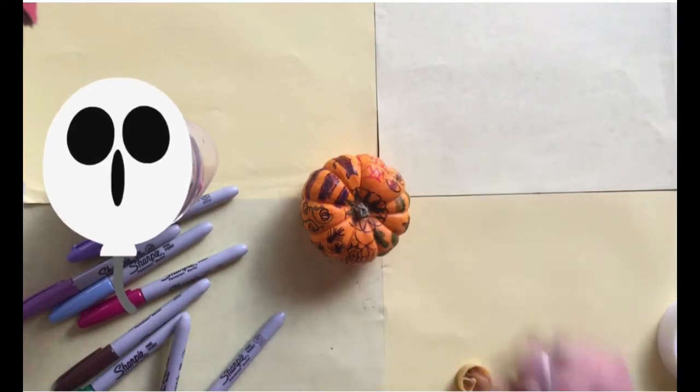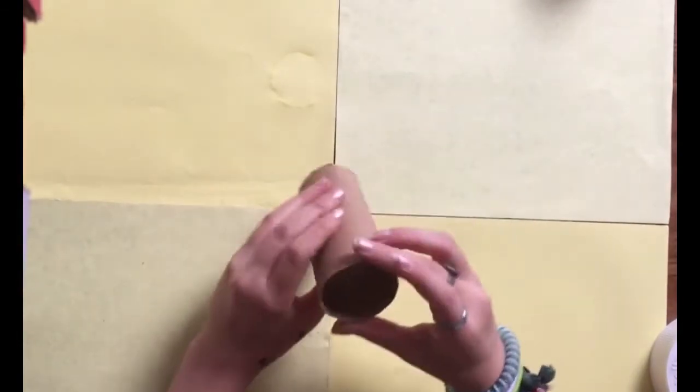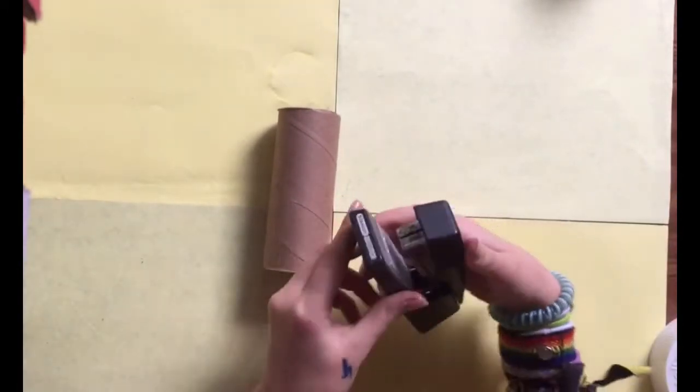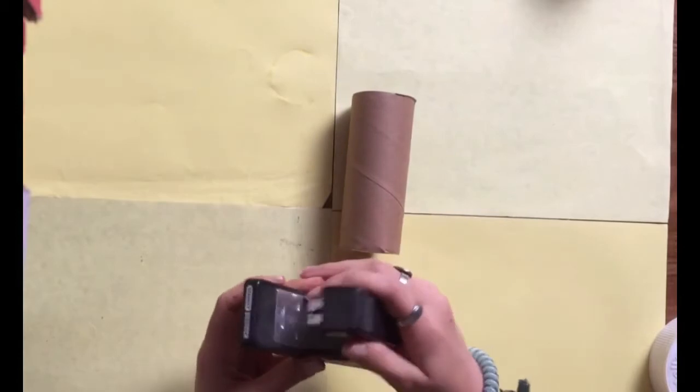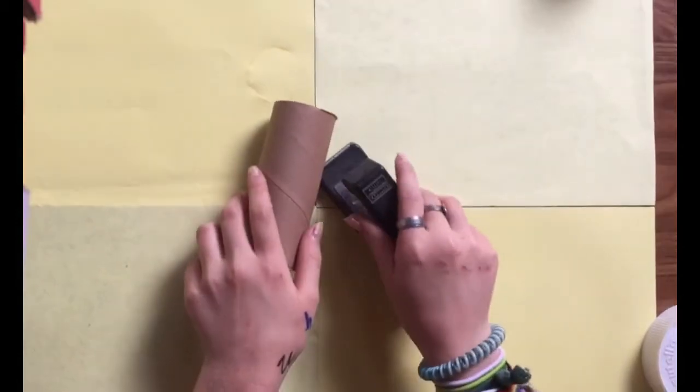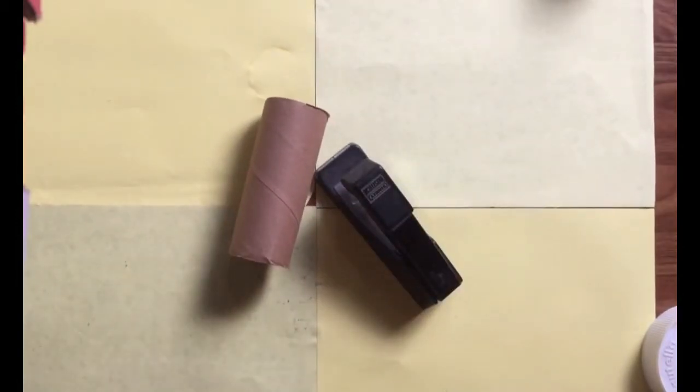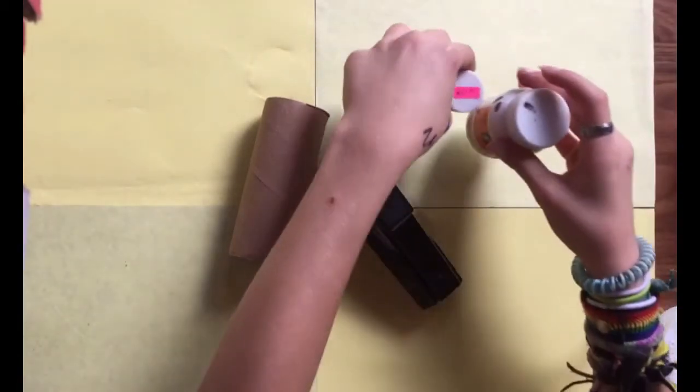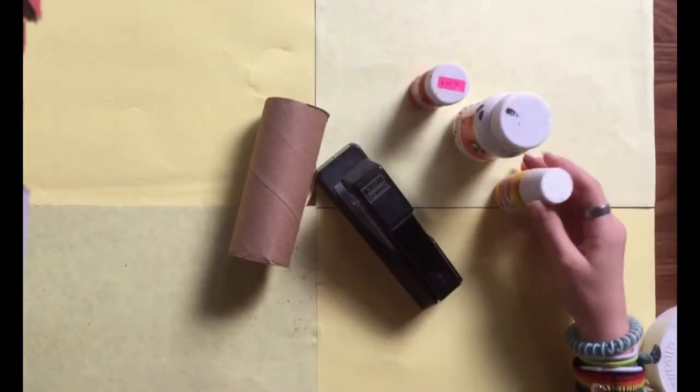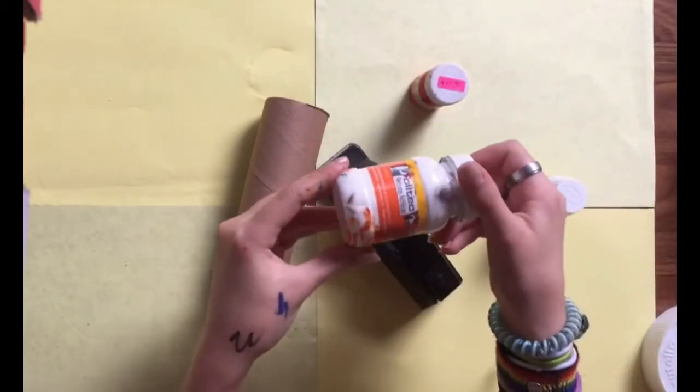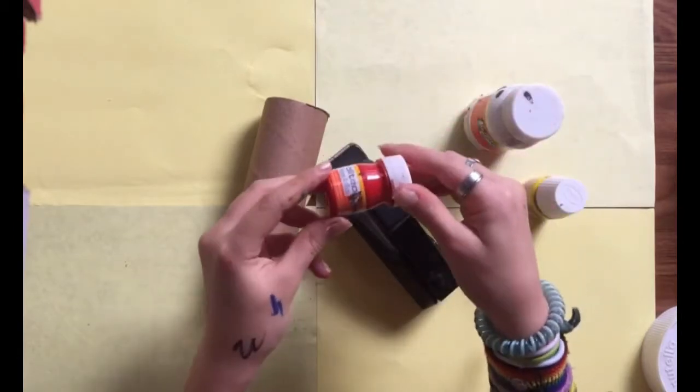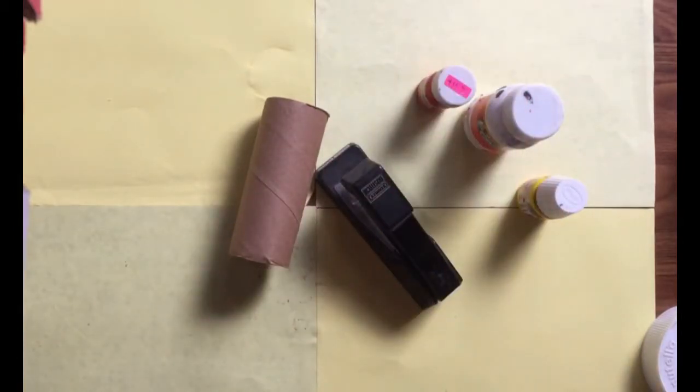Okay, so for the next craft, you will need a paper roll, and you're going to make like a little candy holder that you can give to friends. Then you'll need a stapler, and the next thing you'll need is acrylic paint. You'll need yellow, white, red. Then you'll need water and a paintbrush.